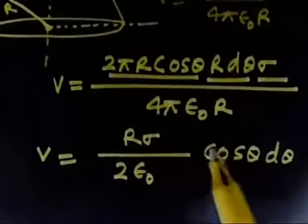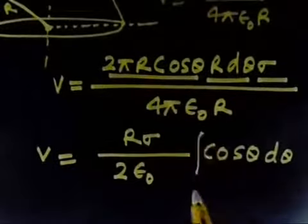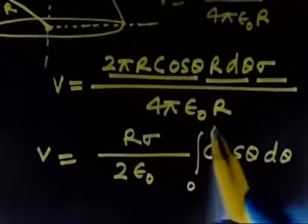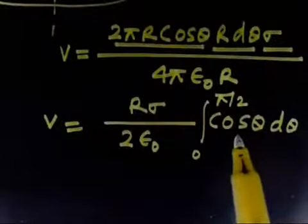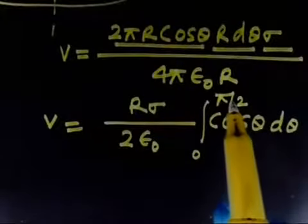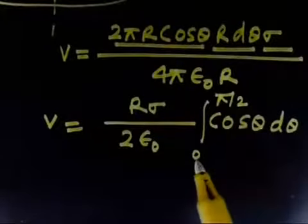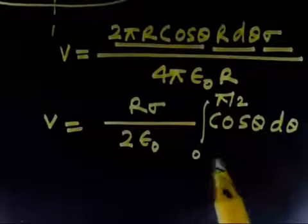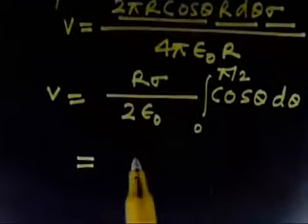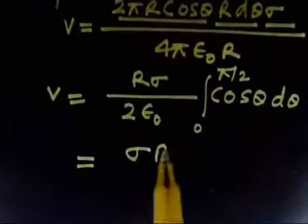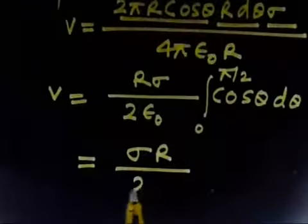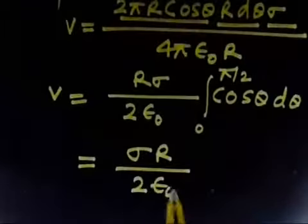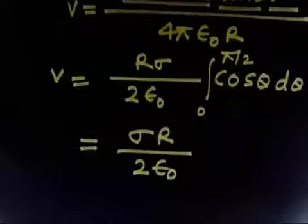Integrating from 0 to pi by 2: the integral of cosine theta is sine theta, and sine theta evaluated from 0 to pi by 2 gives 1 minus 0 equals 1. So the potential at the center of the hemisphere is V equals sigma R over 2 epsilon-naught.